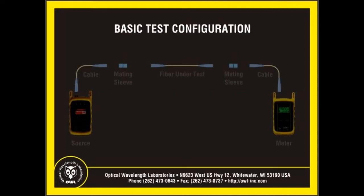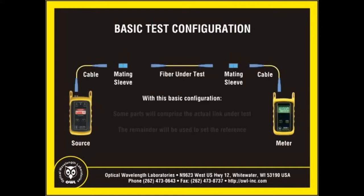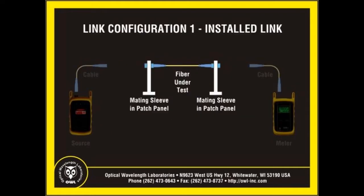While there are multiple reference methods to choose from, the basic test configuration should look like this: source, cable, mating sleeve, fiber under test, another mating sleeve, another cable, and finally the meter. Using this basic configuration, it will be easy to determine what parts belong to the link under test. The remainder will determine your preferred reference method. The first link configuration we will look at is typically considered to be an installed link, where the mating sleeves are probably installed into racks and patch panels. This is by far the most typical link configuration.